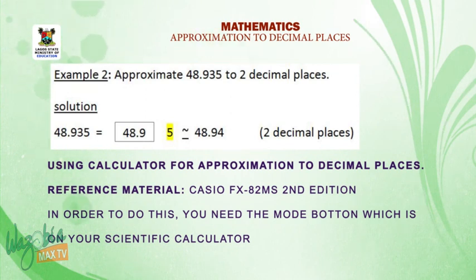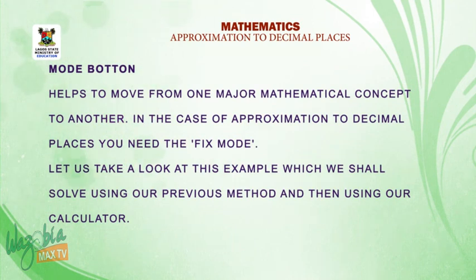Moving on, we're going to learn how to use the calculator to do our approximation to decimal places. And in this case, our reference material is the Casio FX-82MS 2nd edition. In order to do this accurately, you need your mode button, which is on your scientific calculator. The mode button helps you to move from one major mathematical concept to the other. In the case of approximation to decimal places, you need the fixed mode.